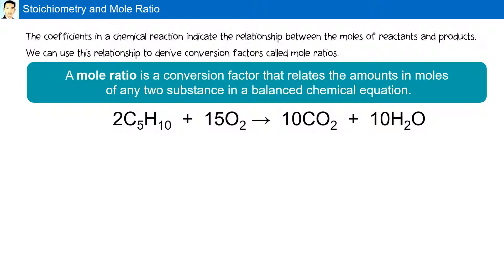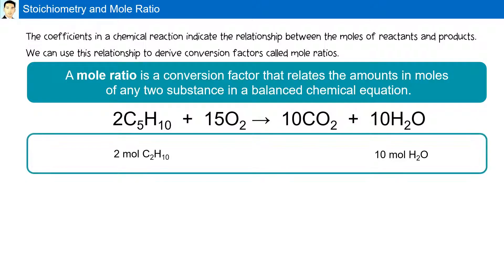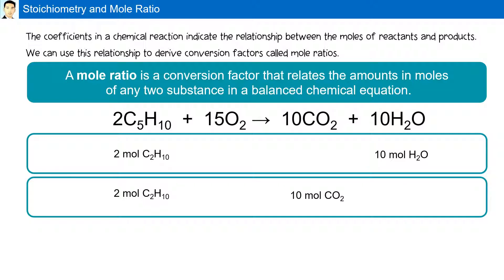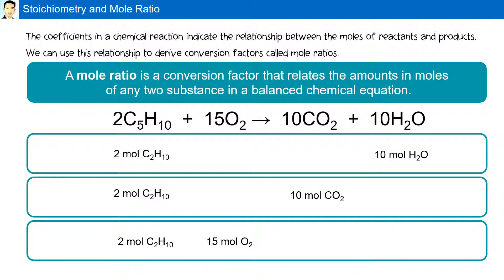In this video, I'm going to show you an alternative example to solve these questions. We can create relationships between any two factors. For example, two moles of C5H10 will react and produce 10 moles of H2O. Similarly, two moles of C5H10 will produce 10 moles of CO2, or two moles of C5H10 will need 15 moles of O2 to react. This is a simple equation that explains how many moles of a reactant will react to produce how many moles of product.